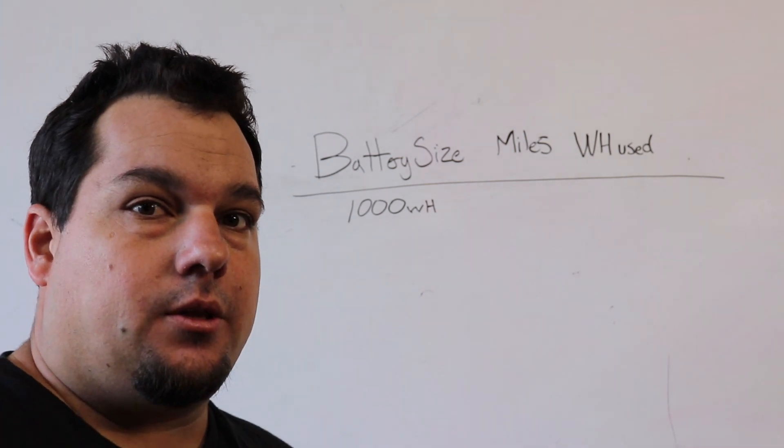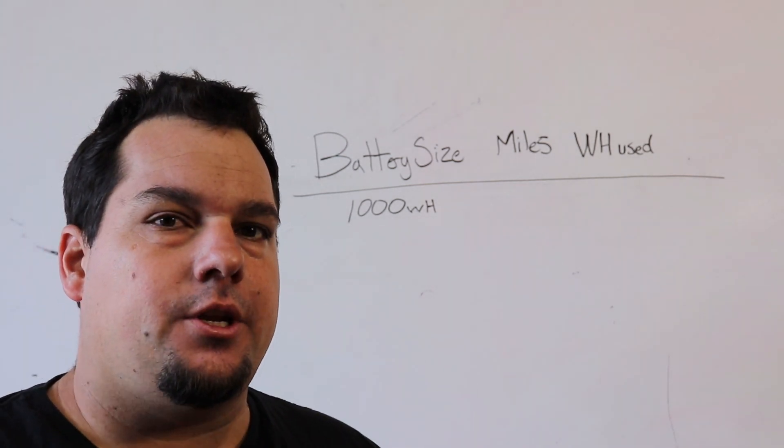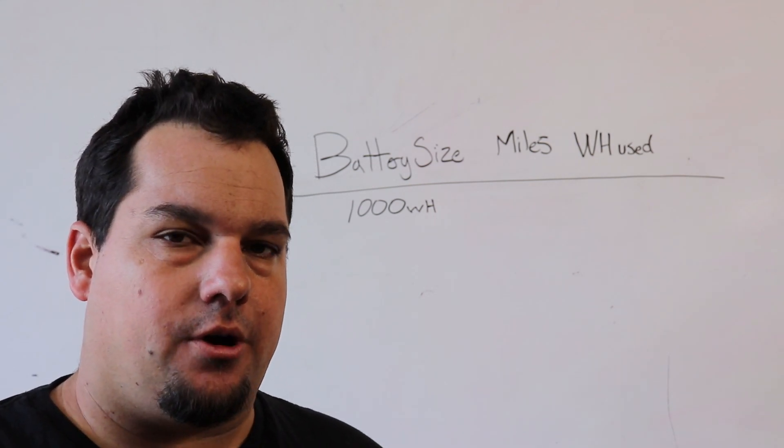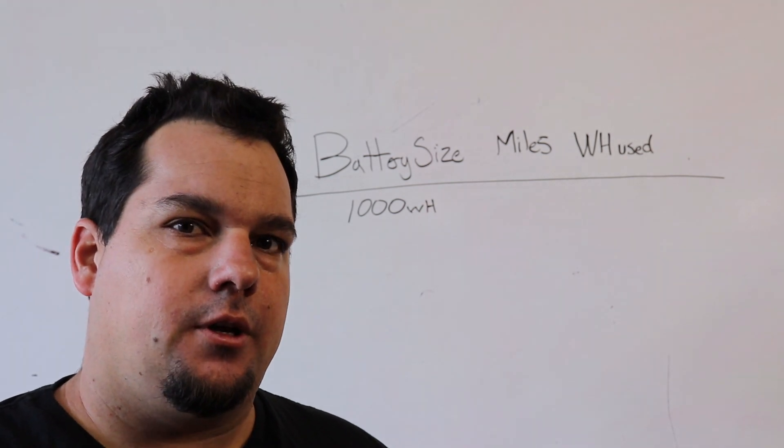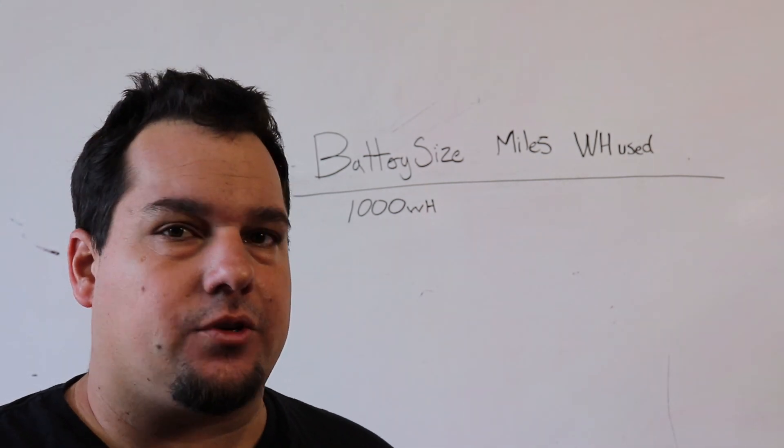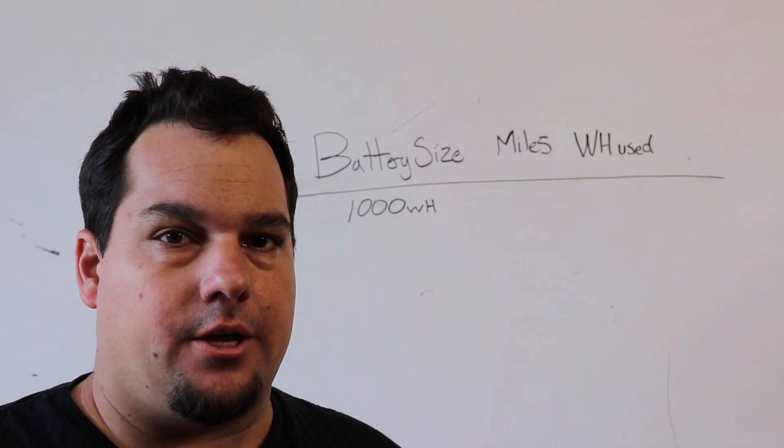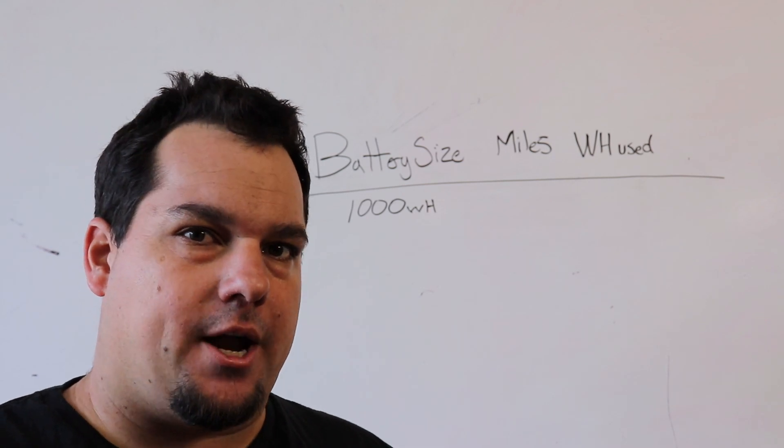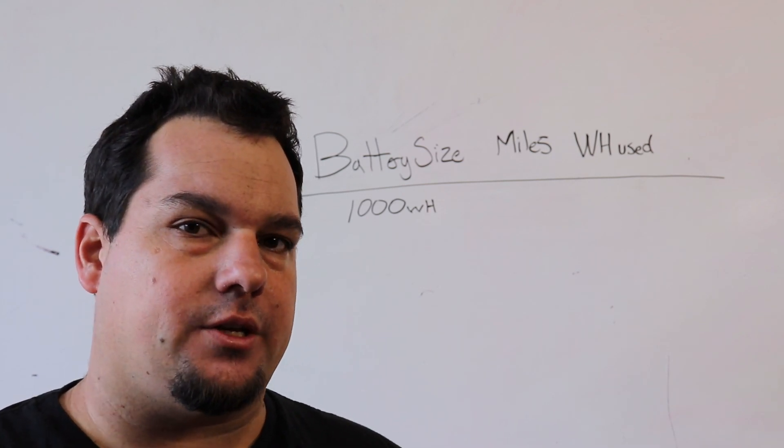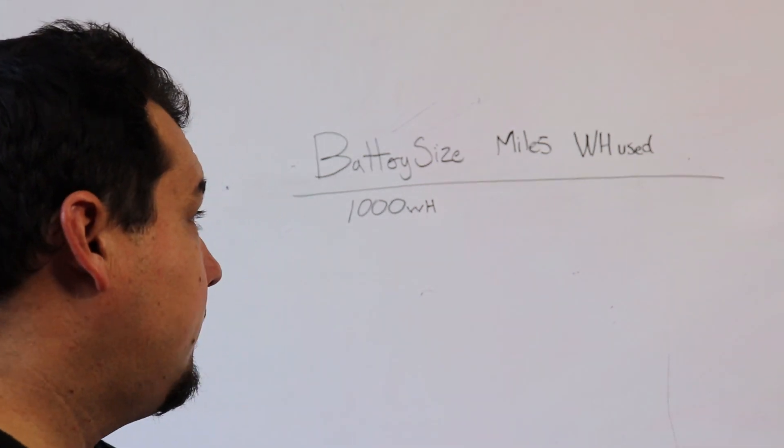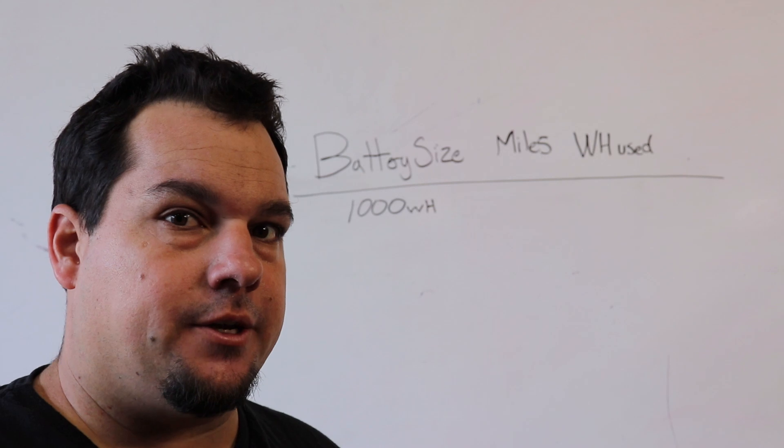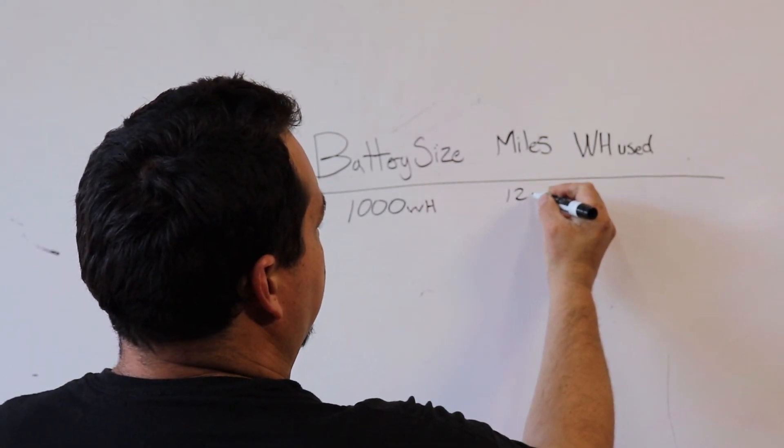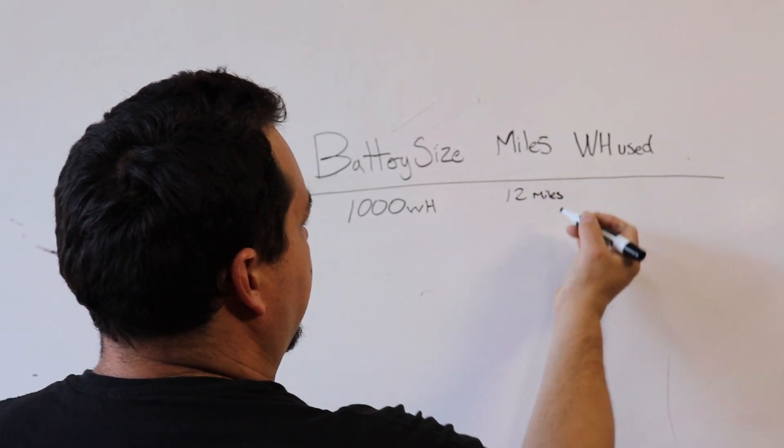Now the way that you need to do this is you need to take your e-bike and you need to charge it all the way up completely full and then use an app like Strava or any of those basically fitness apps and go for a ride and see how many miles that you went exactly. So basically for an example, let's say that I took my e-bike fully charged and rode it for 12 miles.